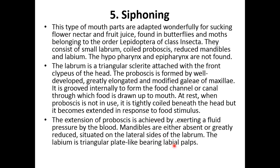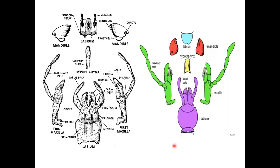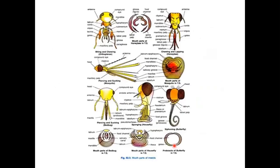All kinds of diagrams are shown in the first slide. Here is the siphoning type of mouthparts of butterfly, the sponging type of mouthparts in housefly, the piercing and sucking type of mouthparts in bed bugs, the piercing and sucking type in mosquitoes, the chewing and lapping type in honeybees, and the basic or fundamental biting and chewing type of mouthparts. Thank you very much.